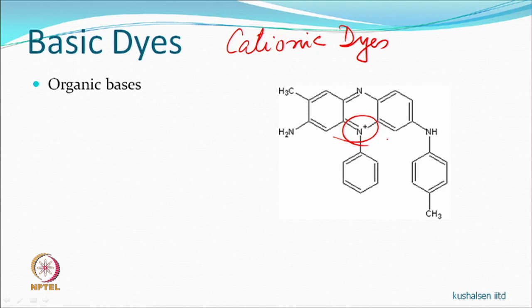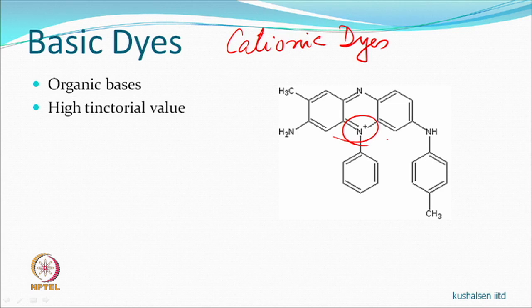Basic dyes are called basic because they are bases, just as acid dyes are called acid dyes because they are acids. Because they are bases, they interact with an acid. Structures like triphenylmethane-based cationic dyes have a high tinctorial value — they absorb radiation from the ultraviolet region and radiate in the visible region, appearing more brilliant than other dyes.